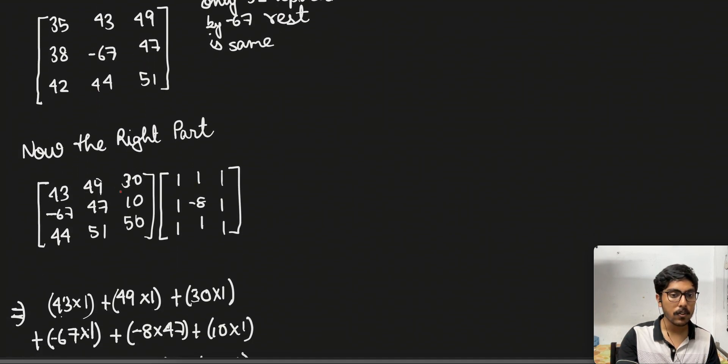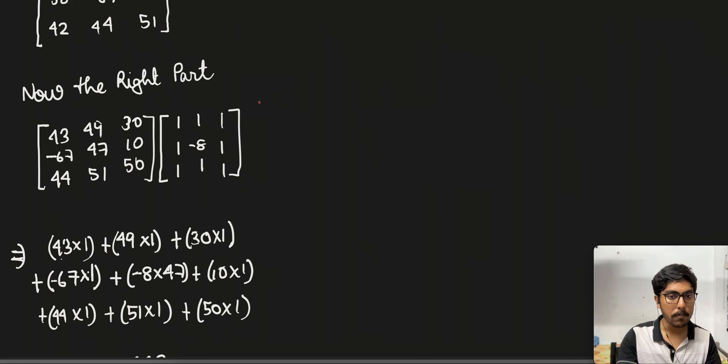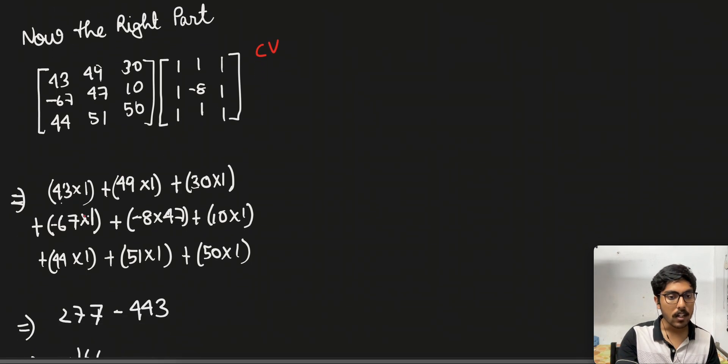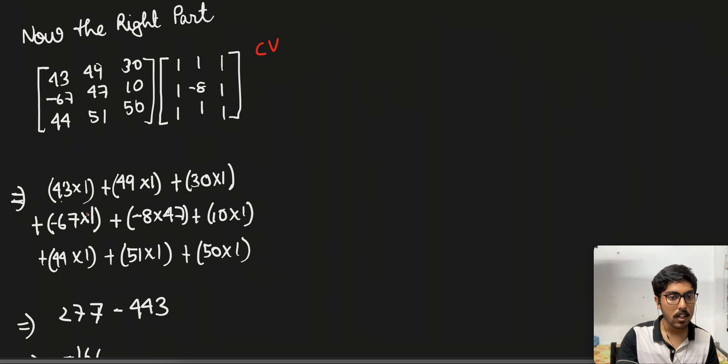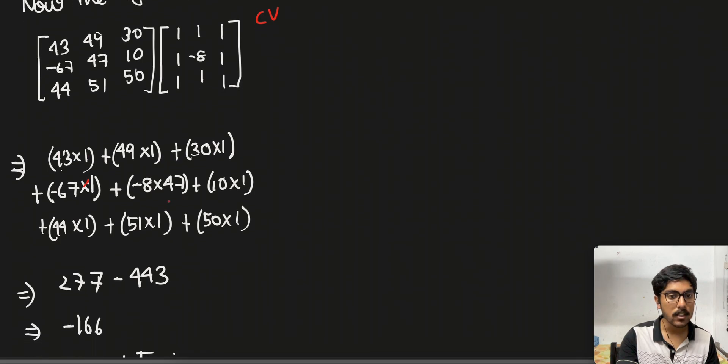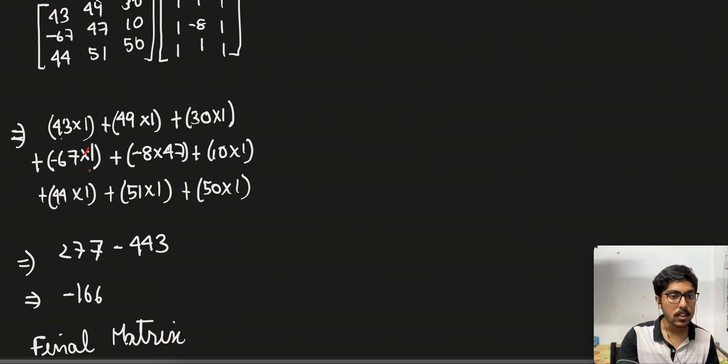So we will again perform the convolution step and then we will have this particular equation where we have 43 into 1, 49 into 1, minus 8 into... Notice that here we use minus 67 in place of 52.